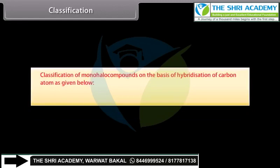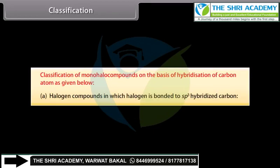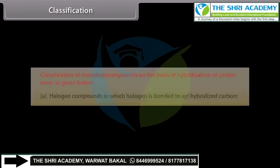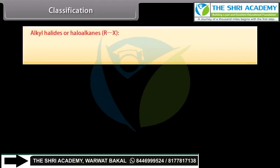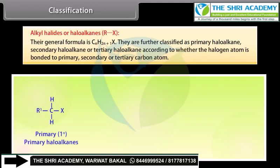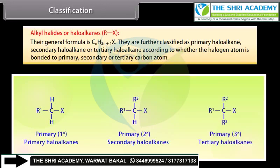Classification of mono-halo compounds is done on the basis of hybridization of the carbon atom. Halogen compounds in which halogen is bonded to sp3 hybridized carbon include alkyl halides or haloalkanes, with general formula CnH2n+1X. They are further classified as primary, secondary, or tertiary haloalkanes according to whether the halogen atom is bonded to a primary, secondary, or tertiary carbon atom.